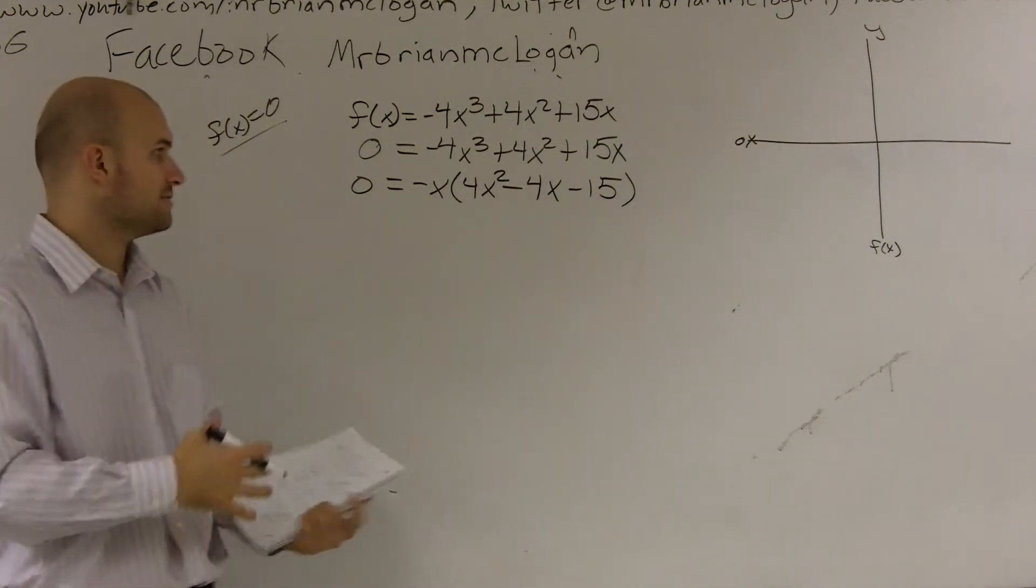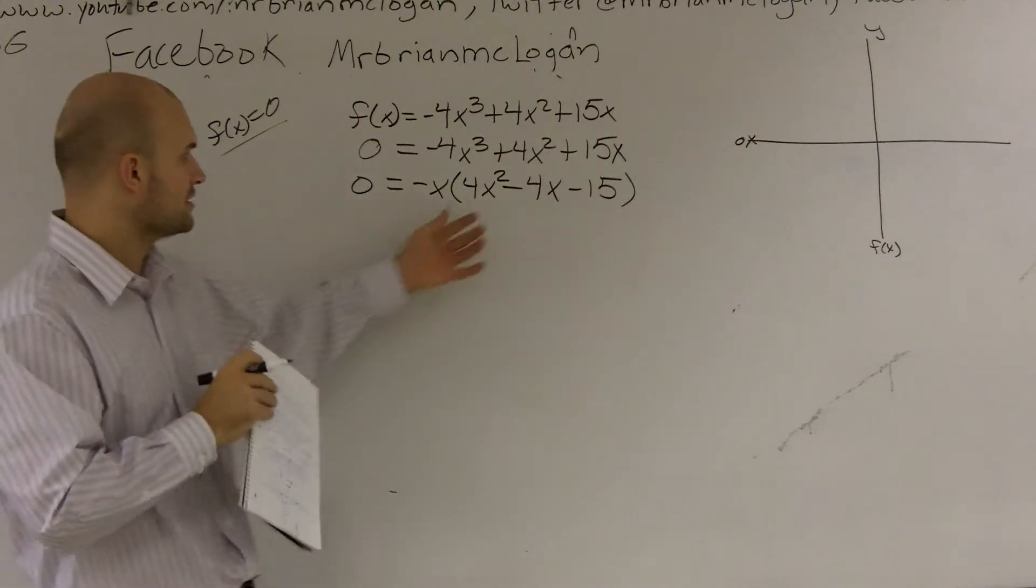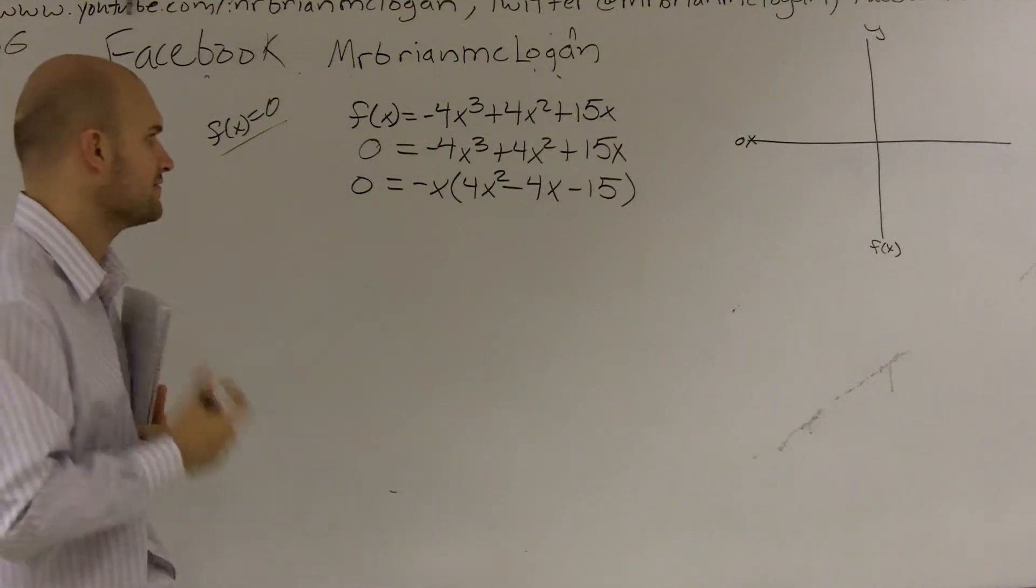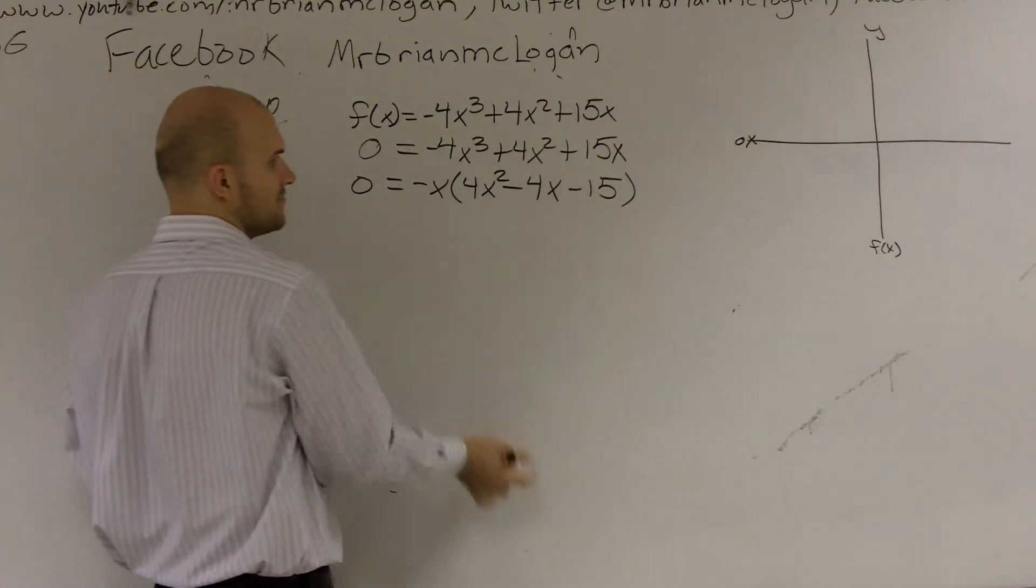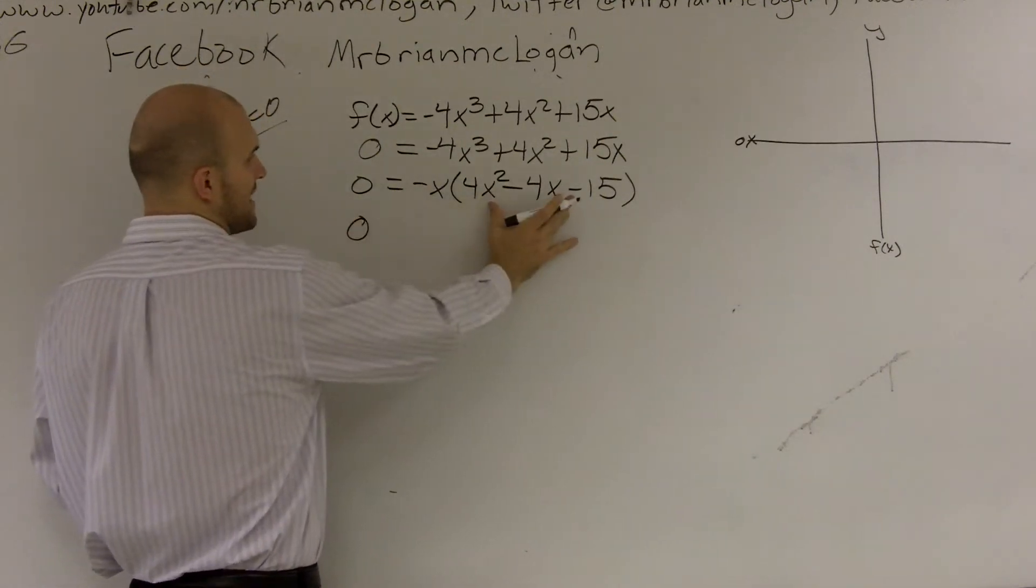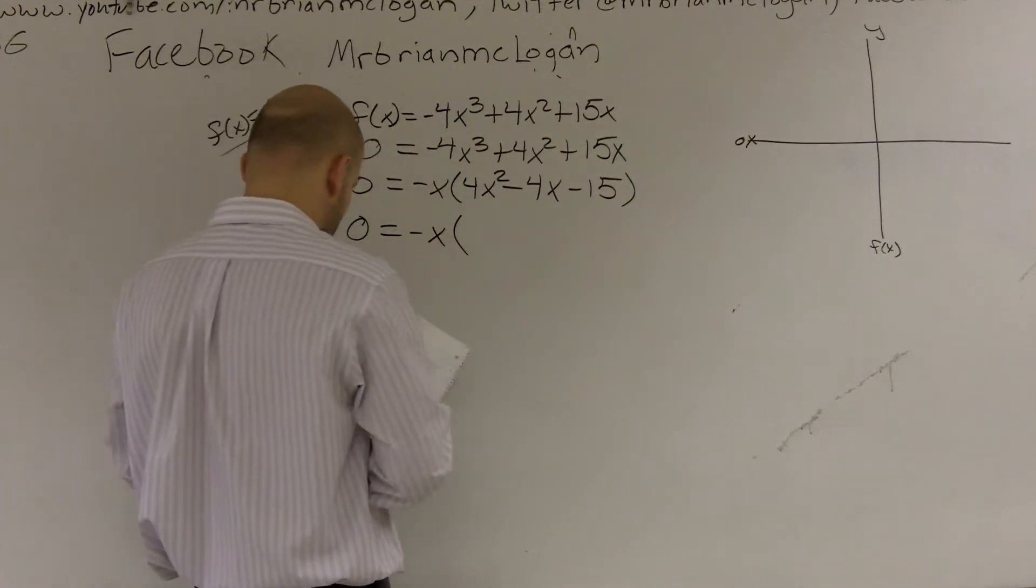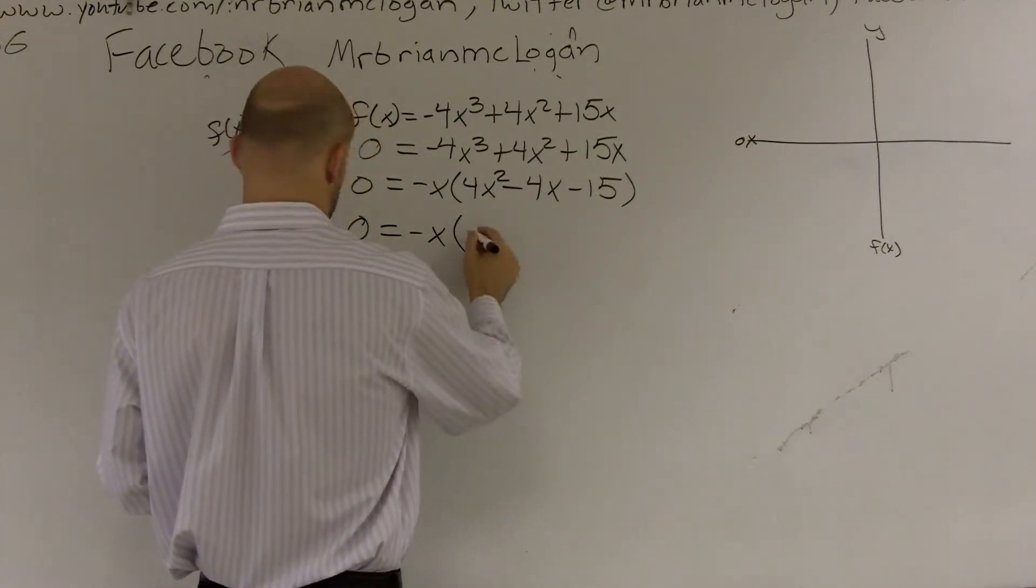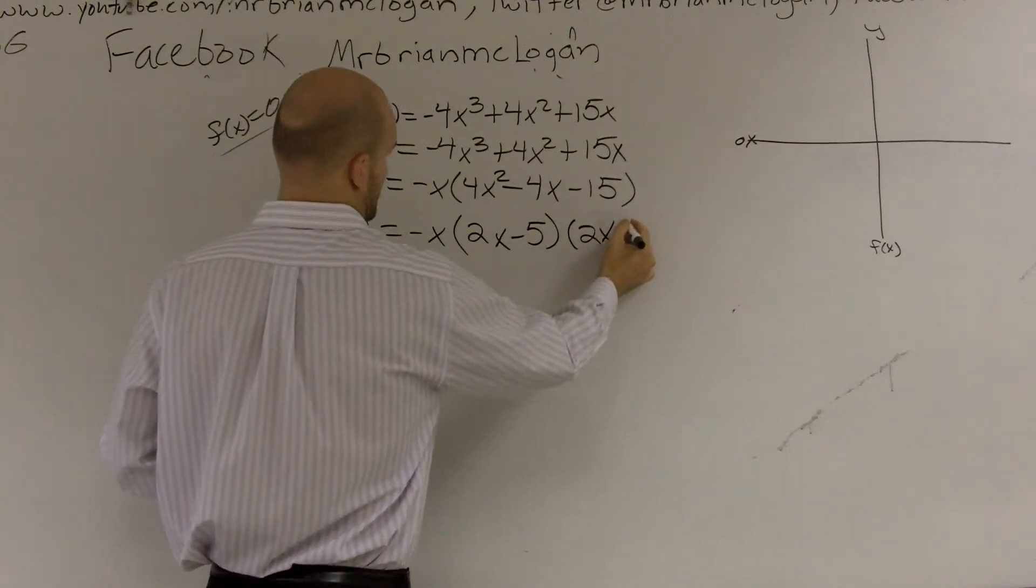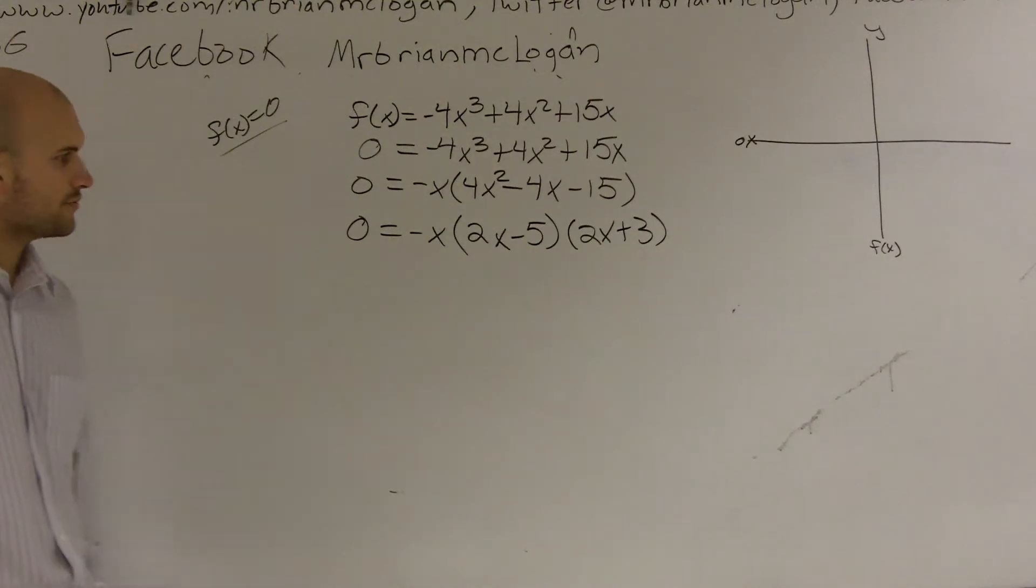All right? Now, for the sake of time on the video, the video is not made on factoring. If you guys need help on how to factor this, I'll be more than happy to show. I have all the videos to show, but I'm not going to spend time right now going over the factoring. This is something you guys can figure out, use the diamond method, do whatever kind of method you need to. But I can factor this further. Zero equals negative x, and I previously did it, so it ended up being 2x minus 5 times 2x plus 3.